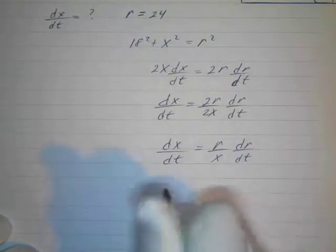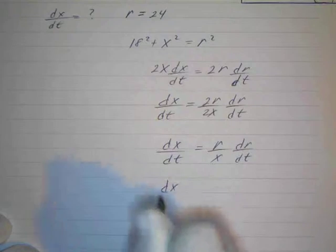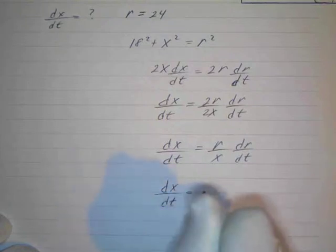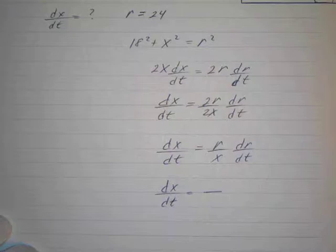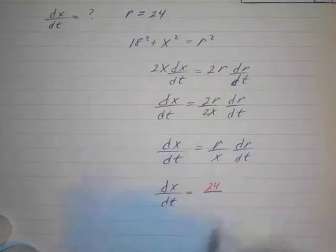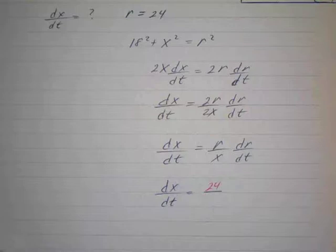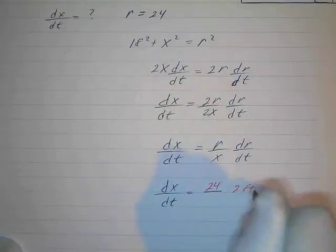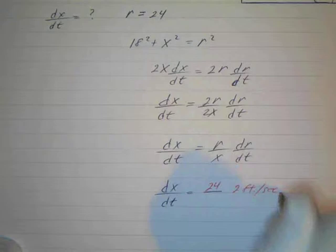And then we can just put our data in. dx/dt equals, and then r is 24, so we can put that in, 24 feet. x feet we don't know, so we'll have to use a right triangle for that. And dr/dt is going to be 2 feet per second. All right, and we have to find out what x is.